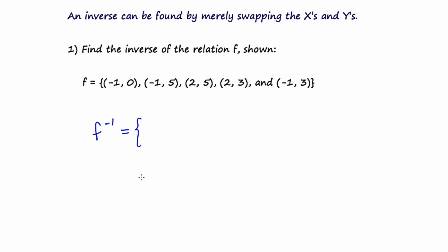The first ordered pair, (-1, 0), would become (0, -1). The second ordered pair, (-1, 5), would become (5, -1). To be very clear, I'm taking x and putting it in the position of y, and taking the y coordinate and putting it in the position of x — swapping the x's and y's. So the third ordered pair, (2, 5), would become (5, 2). The fourth point would become (3, 2), and the last point would become (3, -1).